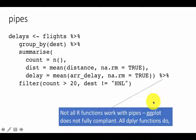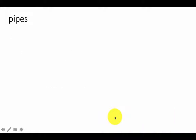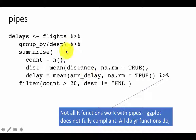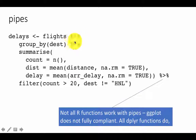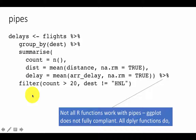Not all functions work well with pipes — ggplot is not fully compliant. But you can clearly see how intuitive this syntax is: taking this, feeding it into this, feeding that into the next step, feeding that into the next. That is why it is called a pipe. The pipe symbol is percent greater-than percent with no spaces in between. Many sequential operations become very easy to understand. You do not need to create unnecessary temporary variables just to use them once.